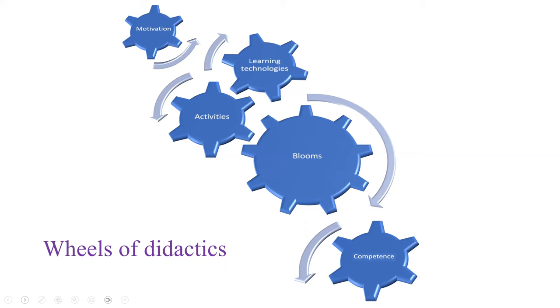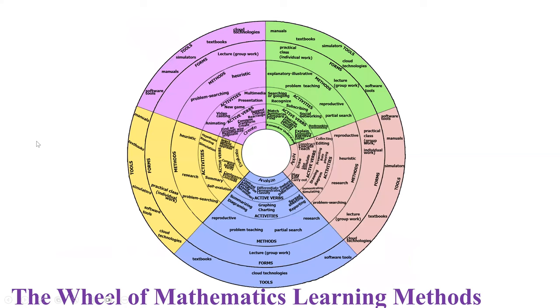During their selection, one should be prepared for the fact that a decision made in one of the areas often affects other decisions. The development of the wheel consisted of several stages. At the first stage, it was decided on the areas of didactics that would be presented in the form of a wheel. The results of the survey of mathematics teachers made it possible to determine the following areas.